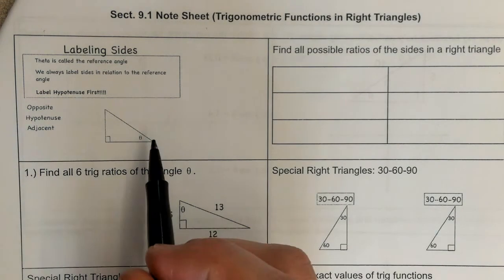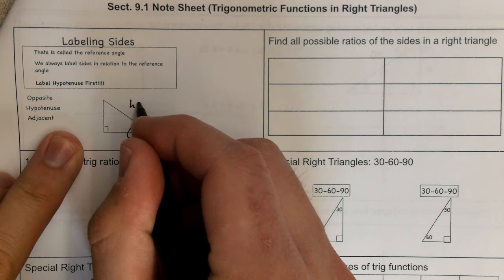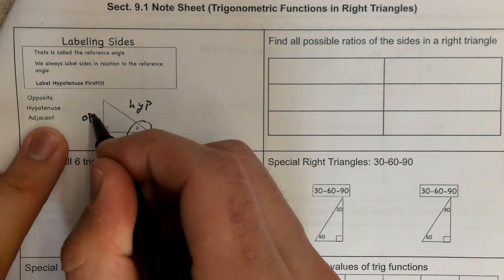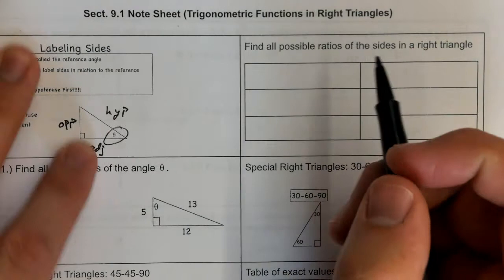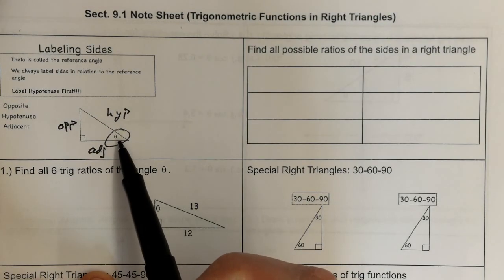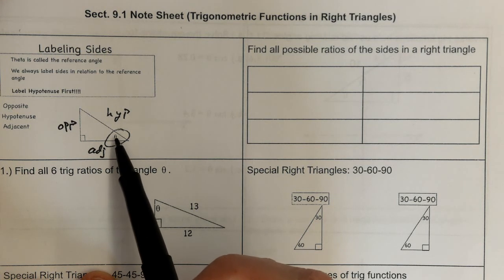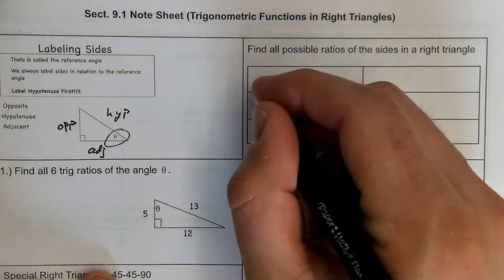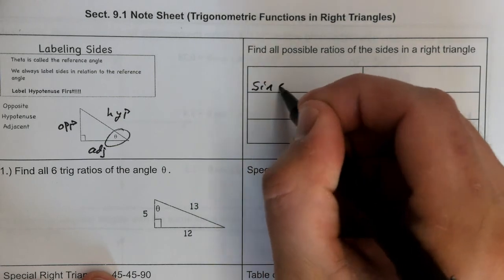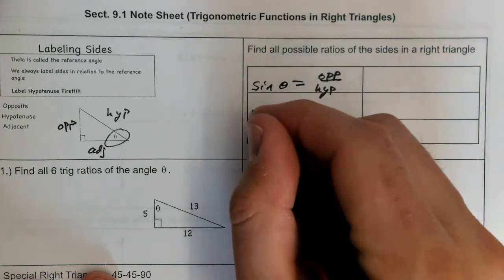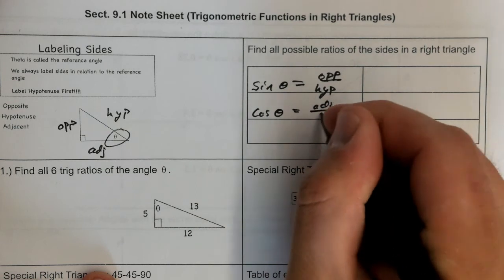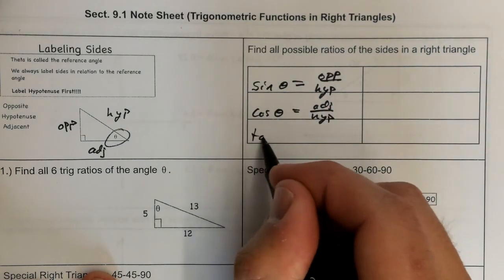We've already talked about labeling triangles in reference to an angle. If this is theta, then this would be the hypotenuse — we abbreviate that 'hyp' — this would be the opposite side, and this would be the adjacent side. Theta is typically the variable we use for missing angles instead of x. It's a Greek letter that looks like a zero with a slash through it. We've looked at three trig ratios: sine of theta equals opposite over hypotenuse, cosine of theta equals adjacent over hypotenuse.